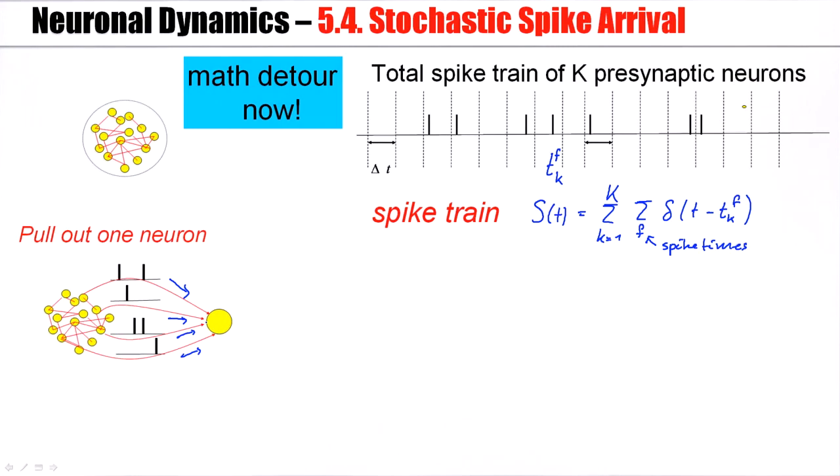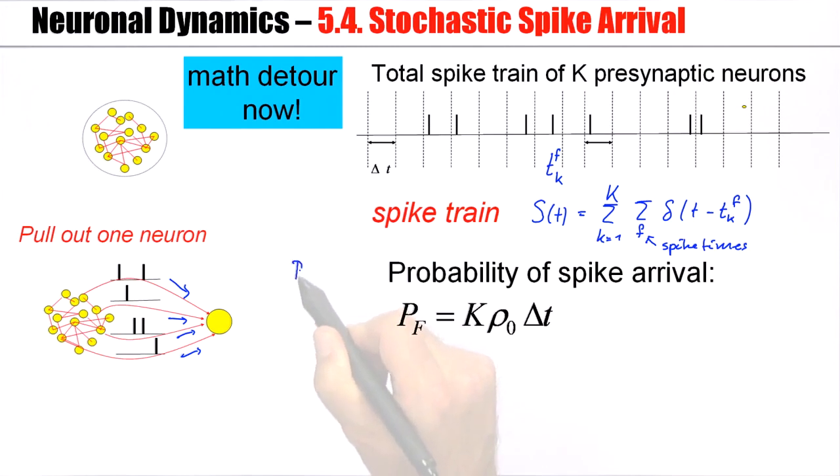So far, the observed spike train. I said previously that from the point of view of this neuron, the spike train looks stochastic. So let's take our Poisson model. Let's assume that each neuron, each of the k neurons, fires at a constant rate ρ_0. Then the total probability that one of the bins here is filled with a spike is the firing rate of each individual presynaptic neuron times K, the total number of presynaptic neurons.